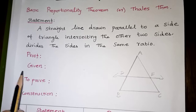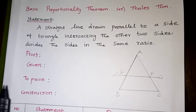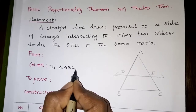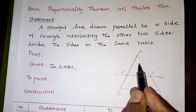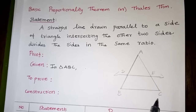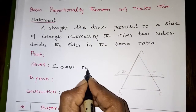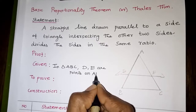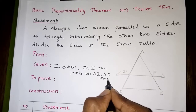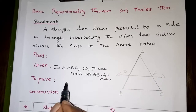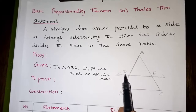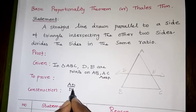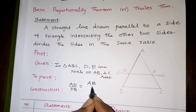For the proof, we start with what is given. In triangle ABC, D and E are points on sides AB and AC respectively. D and E are points on AB and AC. To prove: AD by DB equals AE by EC.